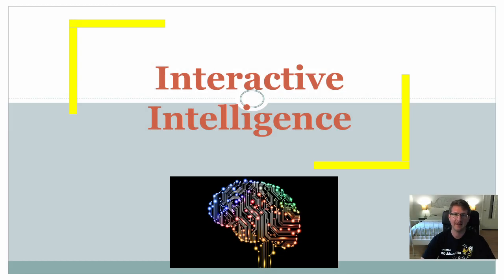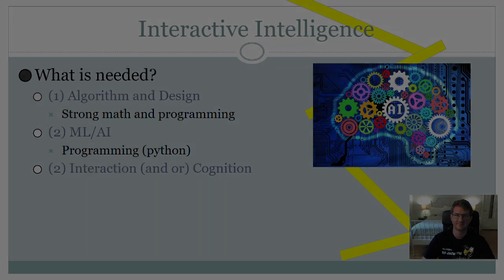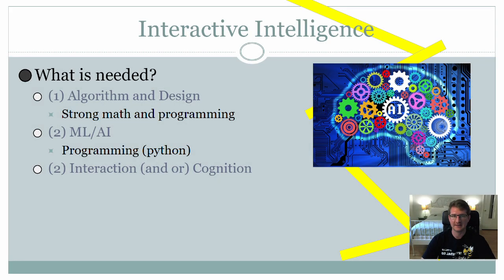Now let's take a look at interactive intelligence. From what I can see in the program, interactive intelligence seems to be what Georgia Tech calls their version of artificial intelligence. I don't know exactly how they distinguish between the two, but it seems to be that interactive intelligence and artificial intelligence, at least from Georgia Tech's standpoint, are essentially synonymous.